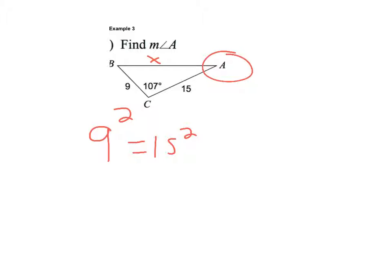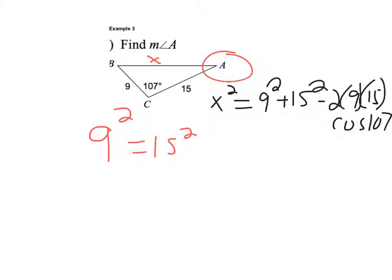So if we're looking for that, we could say x squared equals... It's going to be the other two sides. So we're going to have B, A, and B. So we'll have 9 squared plus 15 squared minus 2 times 9 times 15. And then we'll have cosine 107. And then I'm going to square root my answer.